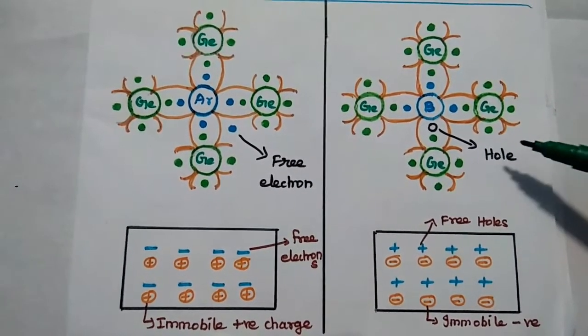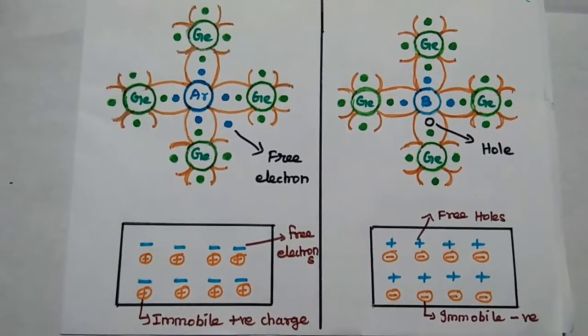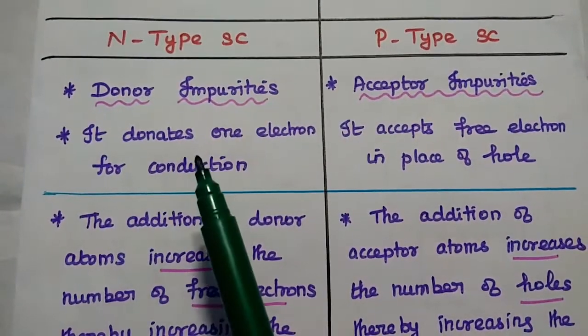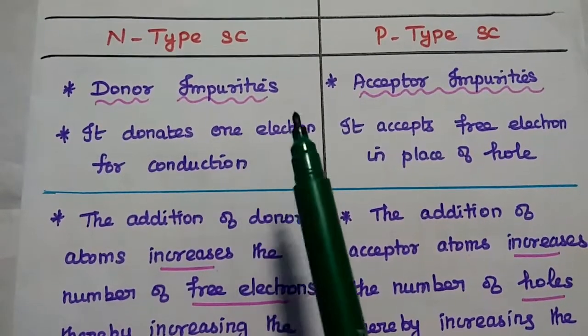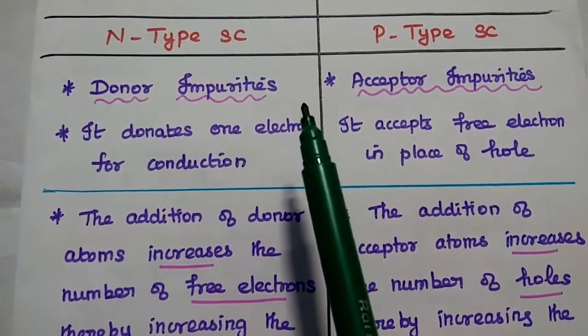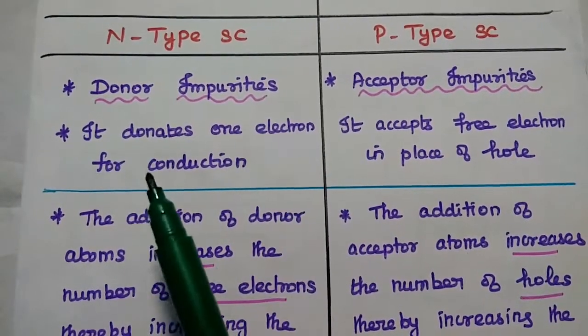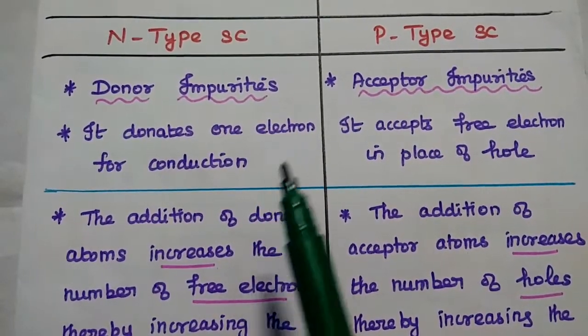Here the majority carriers are holes and minority carriers are electrons. In N-type semiconductor, the pentavalent impurities are called as donor impurities, because it donates one electron for conduction.